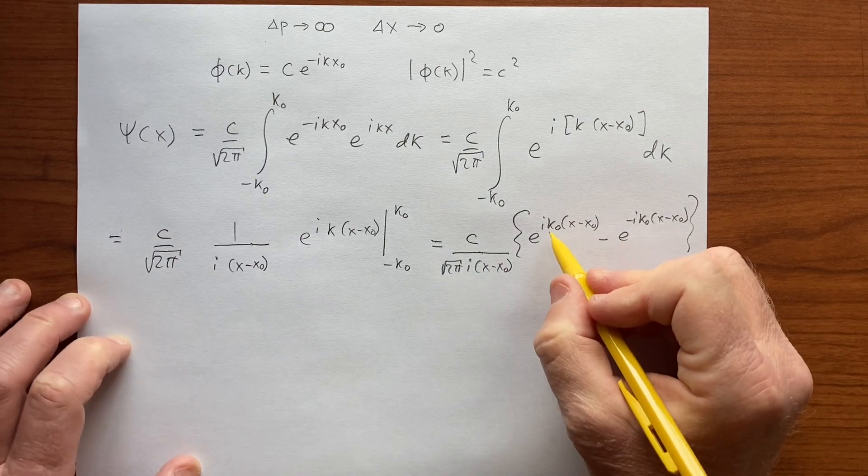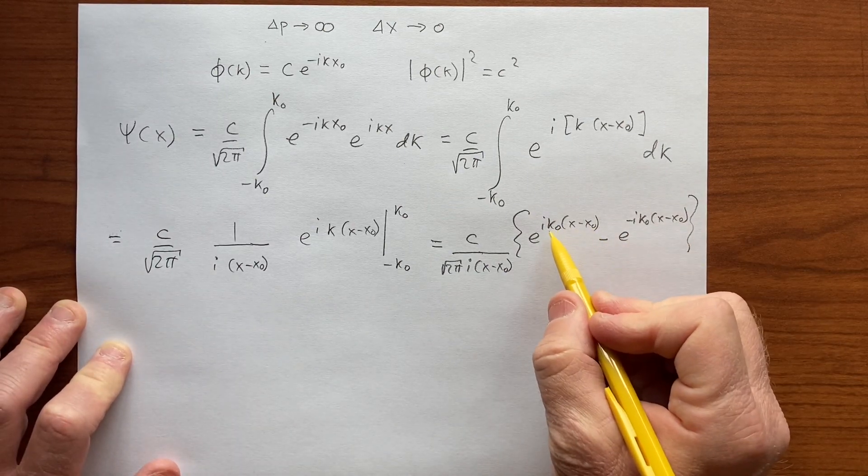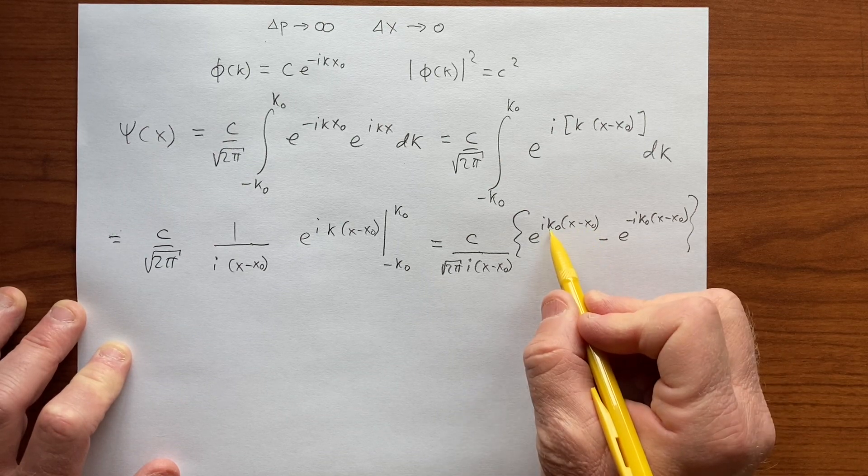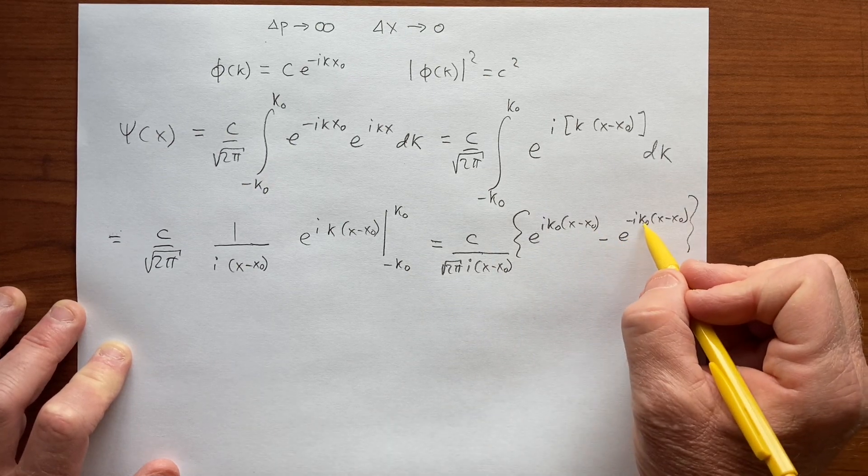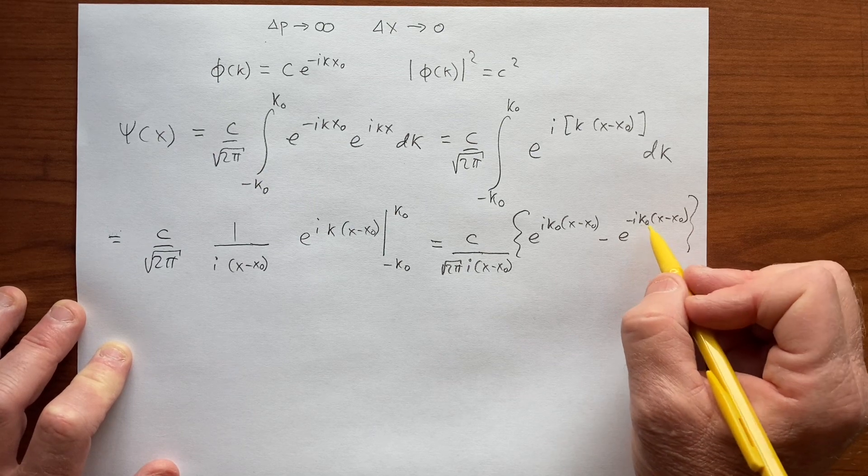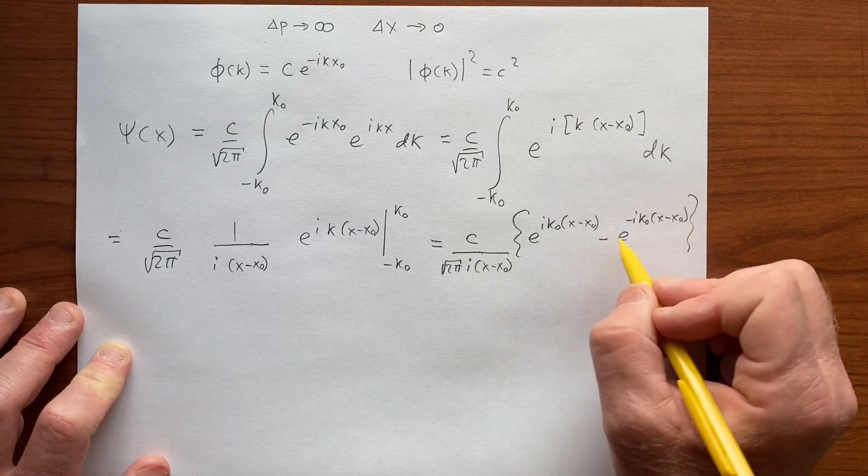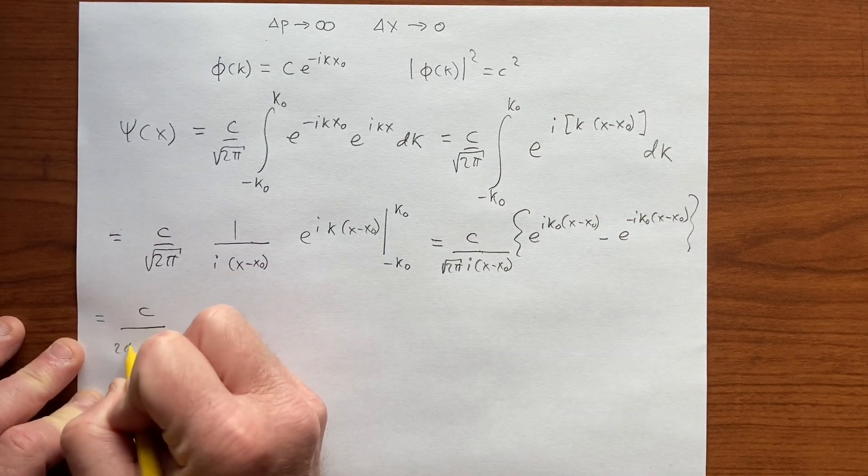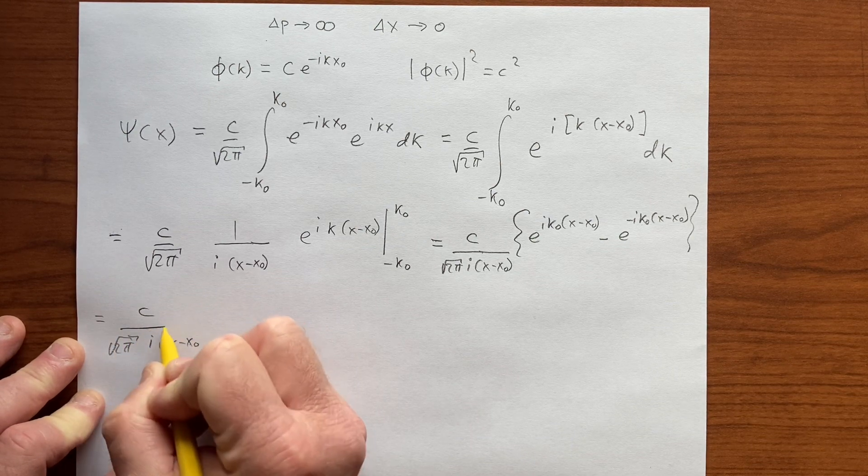This is cosine of k₀(x minus x₀) plus i sine k₀(x minus x₀), and then we're subtracting the cosine of k₀(x minus x₀) minus i sine. Let's write it out: c over square root of 2π times 1 over i(x minus x₀).